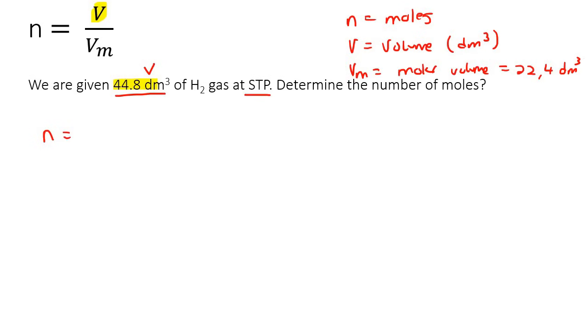So we can just say that n is equal to 44.8 divided by 22.4, and if you work this out, you end up with 2 mole. How easy is that?